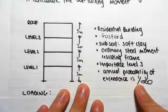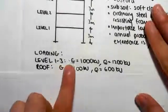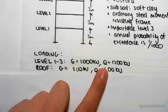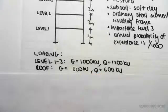We're also given the loading. We're told that from levels one to three, the dead load is a thousand kilonewtons and the live load is twelve hundred kilonewtons. And on the roof, the dead load is eight hundred and the live load is six hundred.